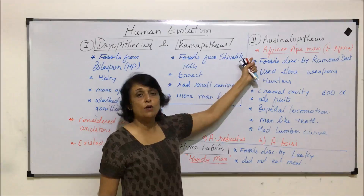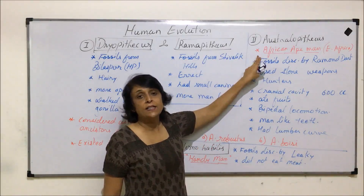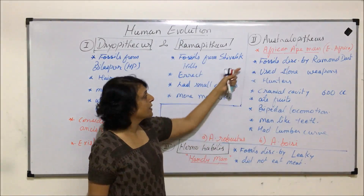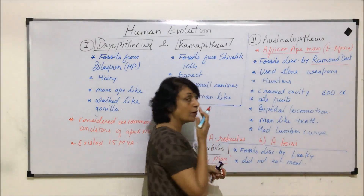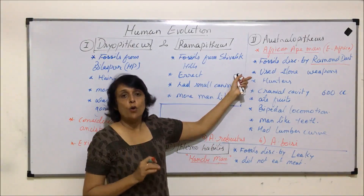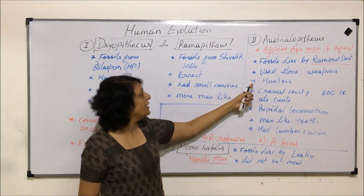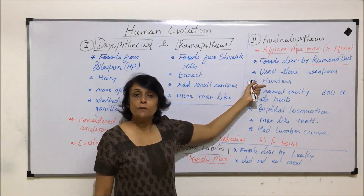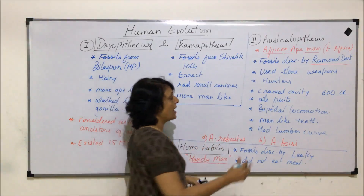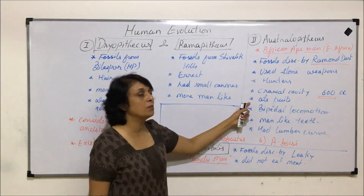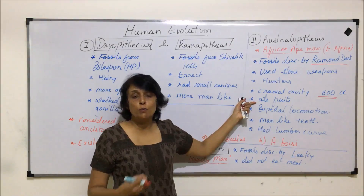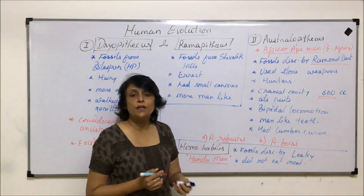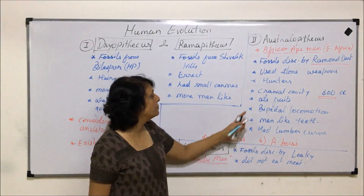The next link is Australopithecus, commonly known as African ape-man. They existed in East Africa, and their fossils were discovered by Raymond Dart. They used sophisticated stone weapons with pointed tips to hunt, making them hunters. Their cranial cavity was 600 cubic centimeters, and they used to eat fruits, as understood from their fossil teeth.